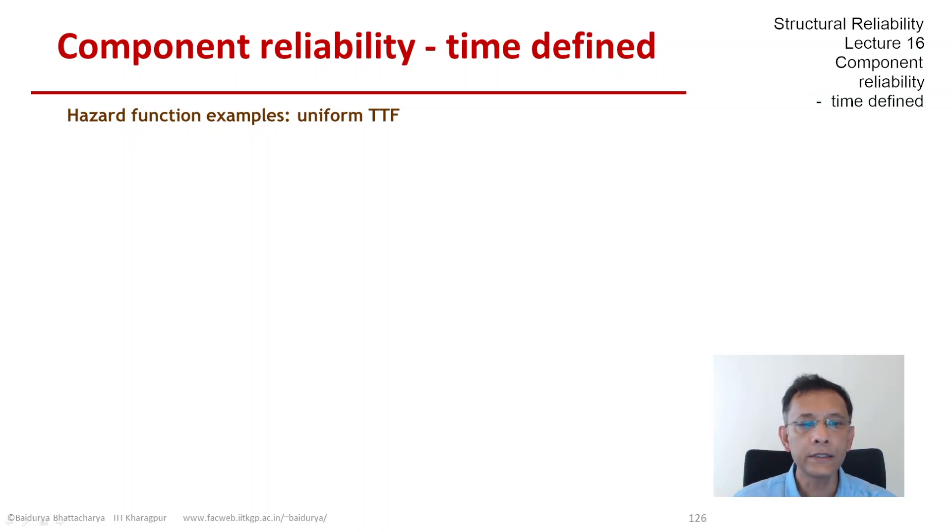So let's start with the uniform distributed time to failure. As we remember, the uniform random variable is defined between two constants a and b. So what you see on the screen are the uniform CDF and the uniform PDF. The PDF is a rectangle between the limits a and b.